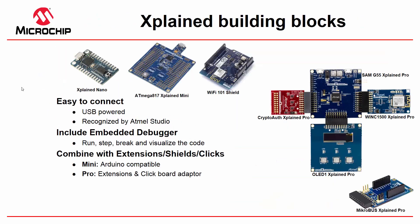Let's start by introducing the Xplained building blocks. In the Xplained platform, all of these kits are USB powered and recognized by Studio. They all include embedded debuggers to run, step, break, and visualize the code. The kits tend to be modular building blocks which combine with extension shields and clicks. The Mini is Arduino compatible, while the Pro supports extension and clickboard adapters.